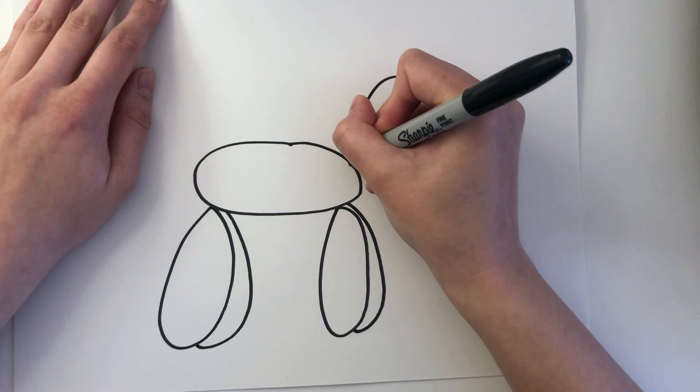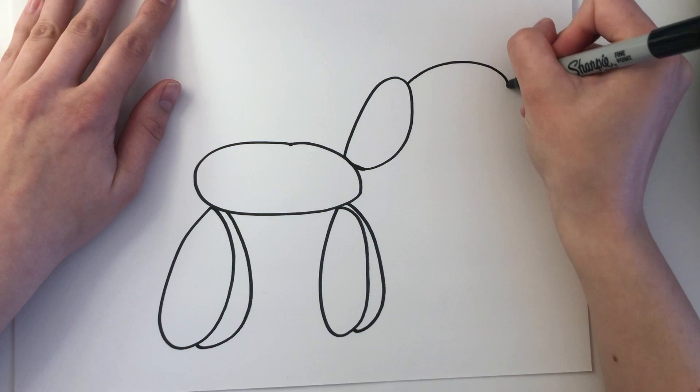Now I'm creating the neck for my dog. If you want a tiny dog, make a smaller neck. For the nose of the dog, I'm going to create another large oval, and at the end of this I'm going to create a little triangle shape. This represents the end of the balloon after you tie it off.